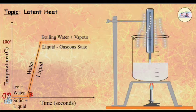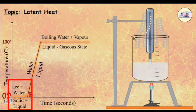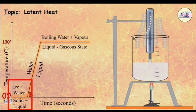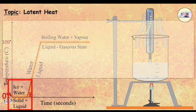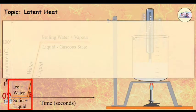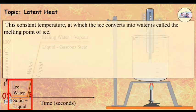The ice absorbs heat energy during this transition and the absorption of energy continues till all the ice converts into water. The temperature remains constant. This constant temperature at which the ice converts into water is called the melting point of ice.